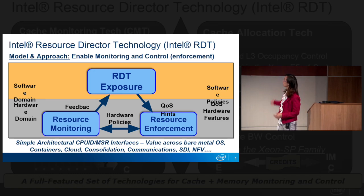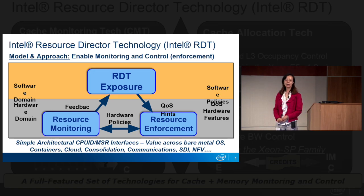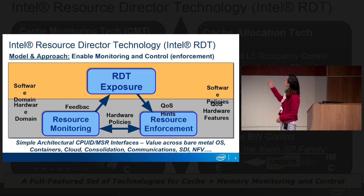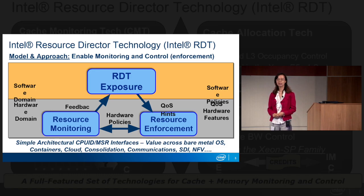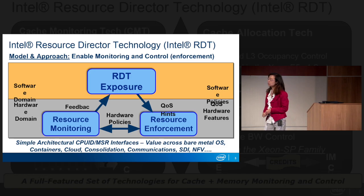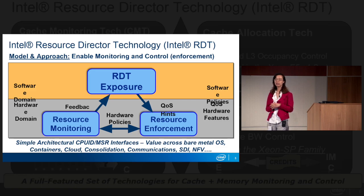There are three major components in Intel RDT technology. The first is resource monitoring, which allows software to monitor shared resource usage by each application. The second is RDT exposure, where shared resource utilization can be exposed to software, which can then directly manage and control those resources. The third is resource enforcement, where real shared resource allocation is controlled in hardware, including cache allocation, cache occupancy allocation, and memory bandwidth allocation.